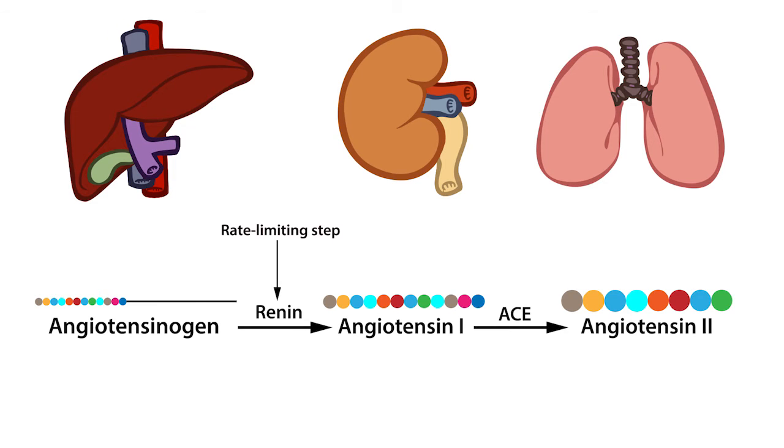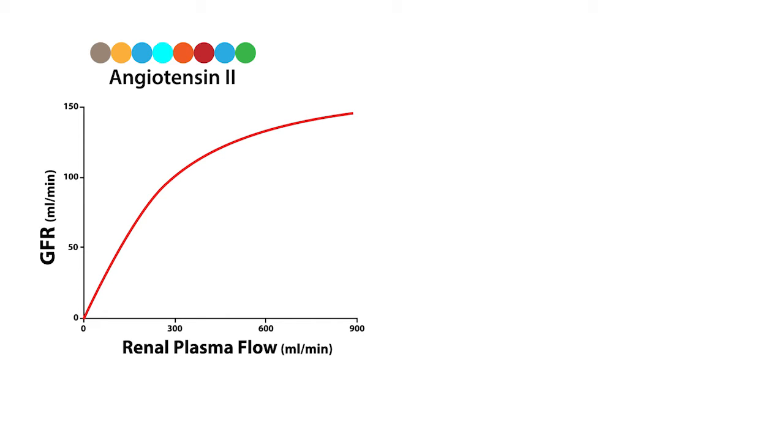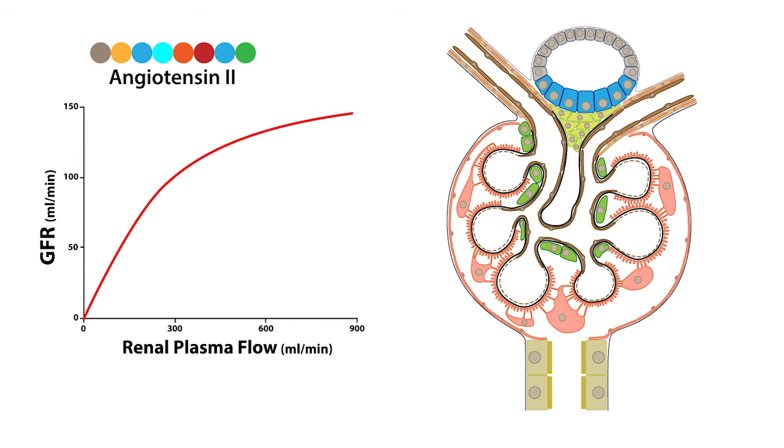The rate-limiting step in this series of reactions is the abundance of renin. Angiotensin-2 regulates GFR by regulating renal plasma flow and the filtration coefficient. We'll use this graph of renal plasma flow and GFR as well as the image of the glomerulus to explain.